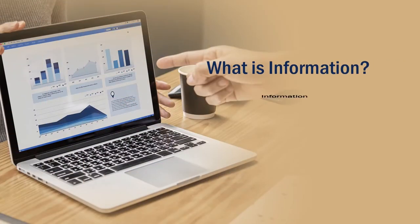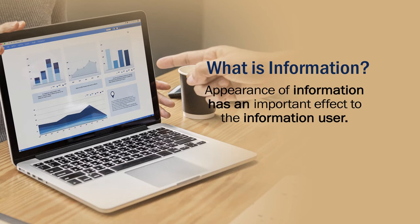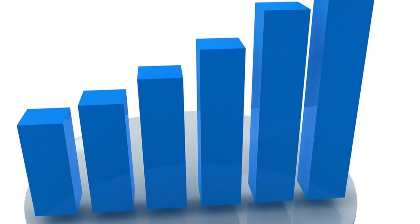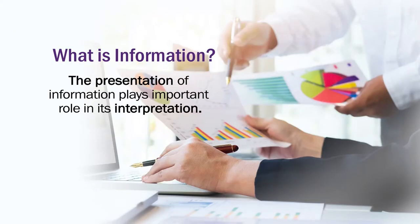Information definition goes even further. Information is processed data — or at least data which has been integrated and contextualized. The appearance of information has an important effect on the information user. The two most common forms of displaying information are in the form of tables or in the form of graphics. We would like to show both these forms, as they are very important for the representation of data and information.